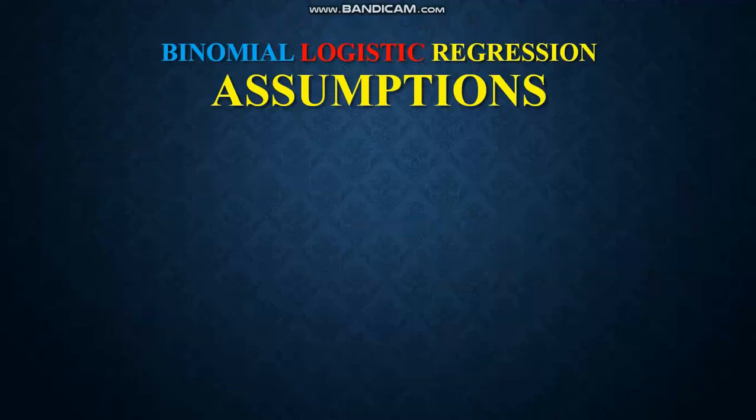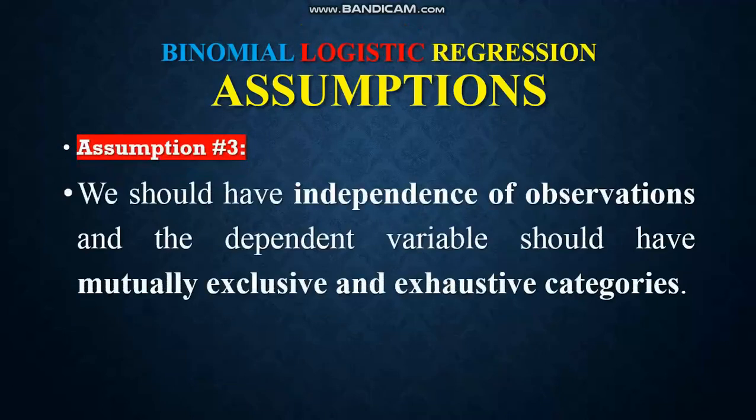The next assumption is that we should have independence of observation, which means there is no relationship between the observations. If we do not have independence of observation, we most likely have repeated measures and will need another type of statistical test.